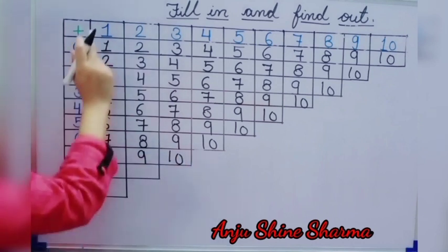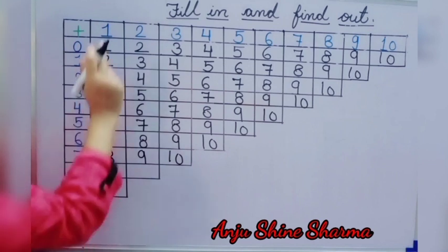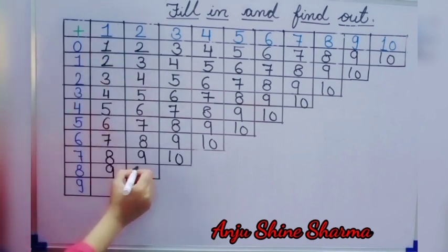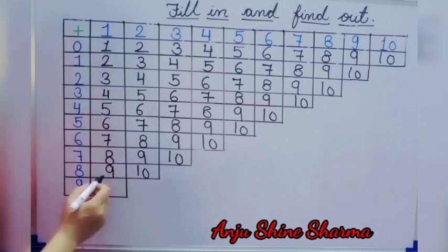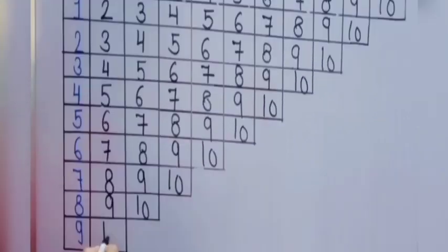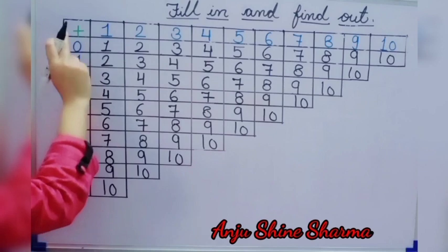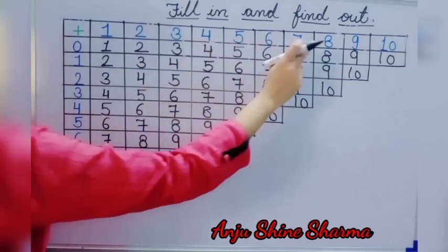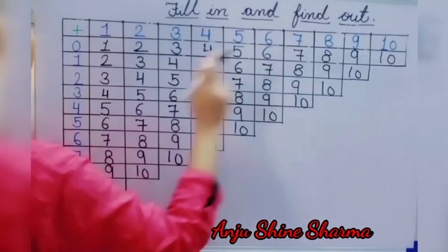Then 8 plus 1 is equal to 9. Then 8 plus 2 is equal to 10. Next, last number is 9. 9 plus 1 is equal to 10. So when we add 0 with all these numbers from 1 to 10, we get 10.